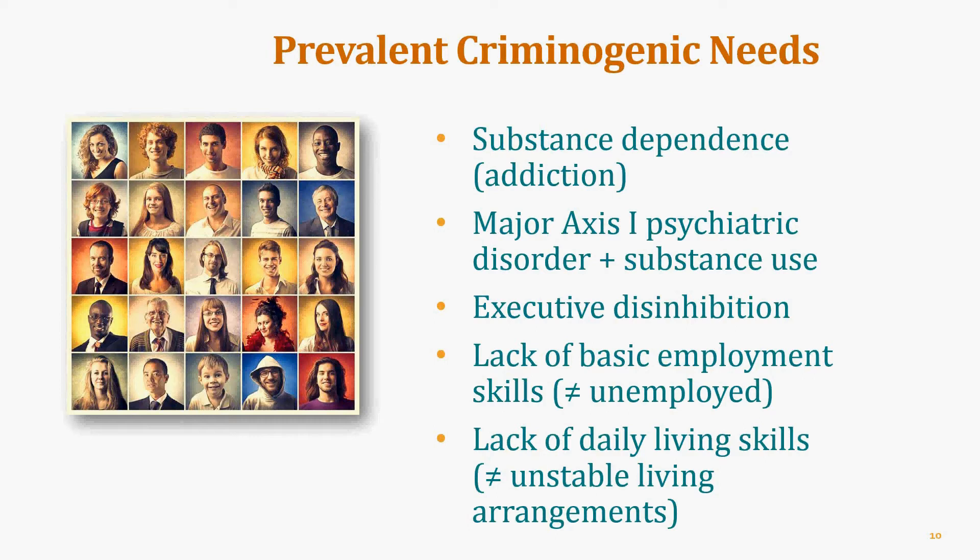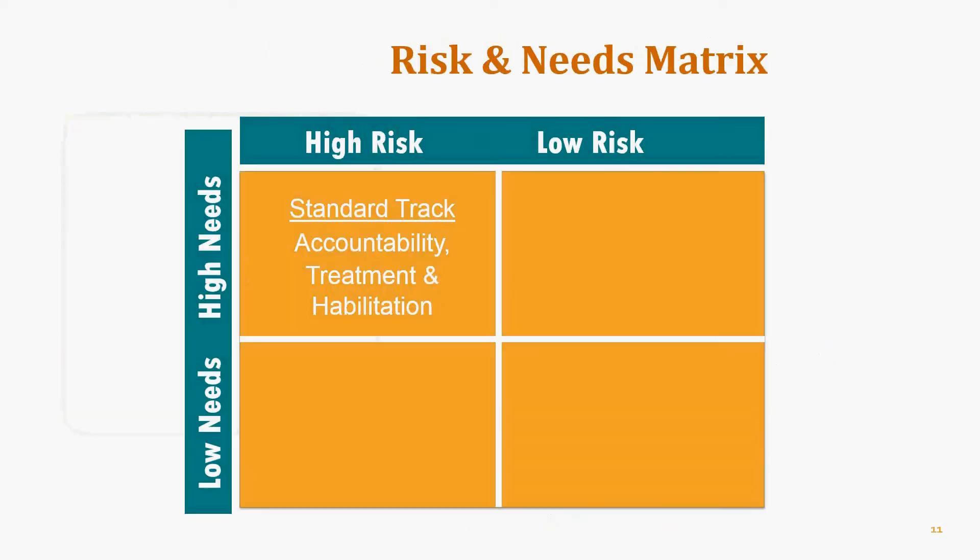High-risk, high-need individuals also need treatment because they have serious clinical syndromes — without good quality evidence-based treatment, they will get worse. Finally, they need habilitation services to adopt pro-social roles, change criminal thinking patterns, and learn adaptive skills such as keeping a job, getting a GED, and improving educational attainments. Without all three legs of the tripod — accountability, treatment, and habilitation — the tripod will tip over and the case will fail.